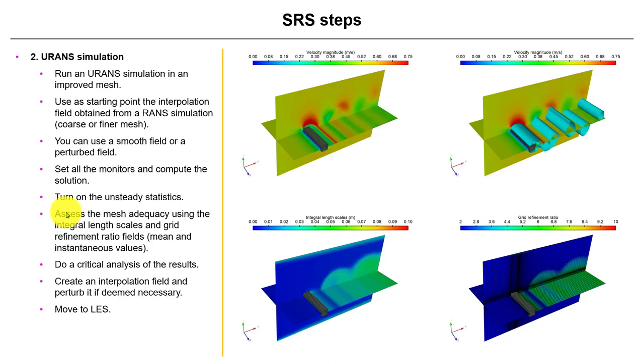So after you get the RANS solution, you move to the URANS solution. So see that the behavior is very different. Here we have some steady behavior. Now see here that we have the von Karman Street behind the cylinder. So now in this case, we're running URANS, we have the time dimension. We need to set up the time step, the CFL, and we do it here in this step that is inexpensive URANS.